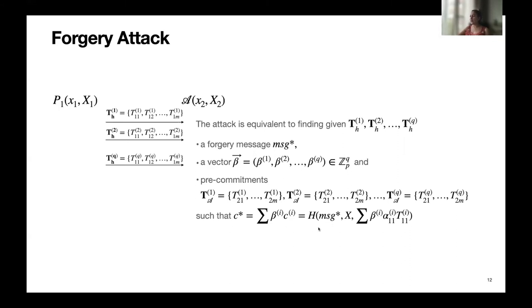The forgery C value is the hash of the forgery message, the aggregated public key, and the linear combination of the delinearized pre-commitments of the honest party. The same linear relationship must hold on both sides of the equation. If the adversary can do that, it can forge the signature. We showed in the paper that the adversary can do this when M = 1 — it is an interesting attack, you can check the paper. But we find it is not possible when M > 1, as long as the discrete logarithm problem is hard.